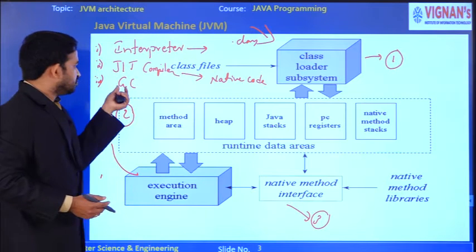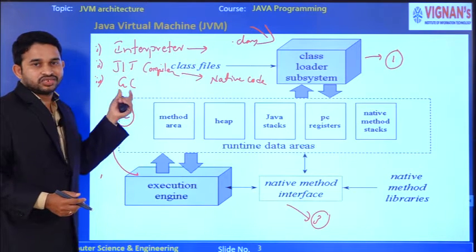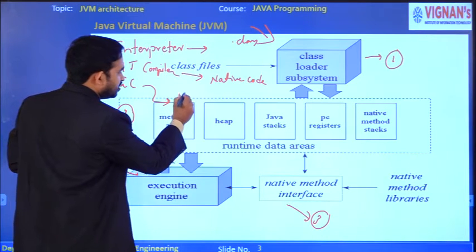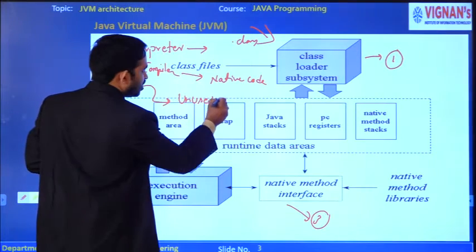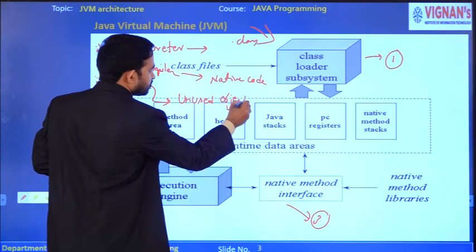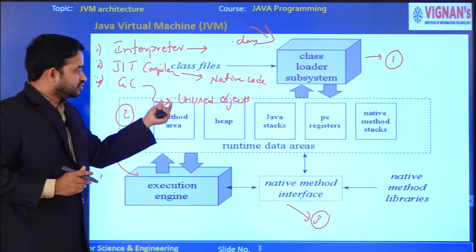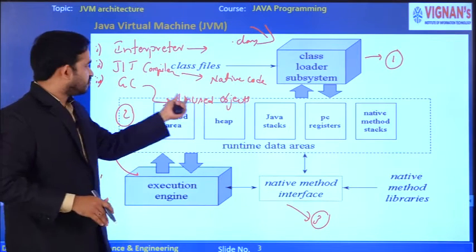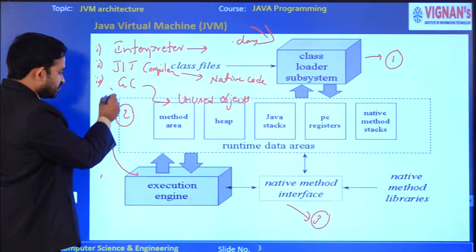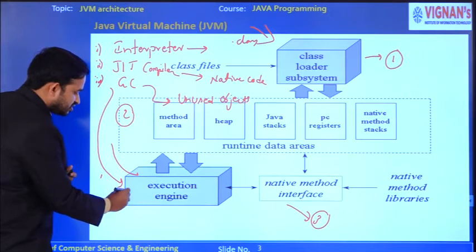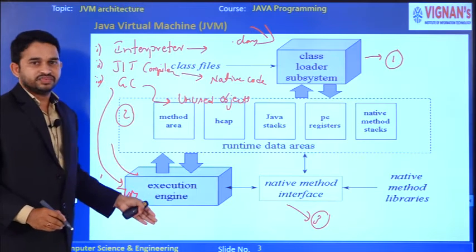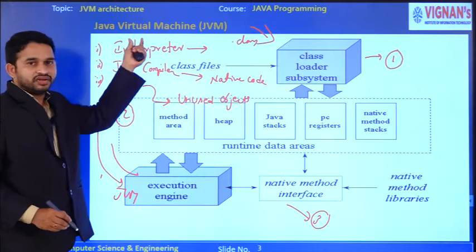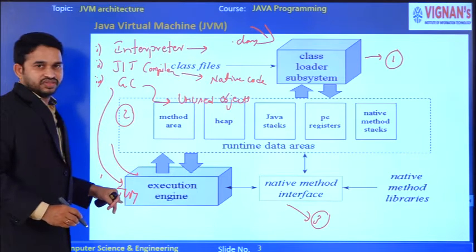Another important component is the garbage collector. It is used to free unused objects' memory. Whatever objects are in an inactive state, their memory is freed by the garbage collector. The JVM calls the garbage collector, just-in-time compiler, and interpreter — all these tasks are done with the help of JVM.